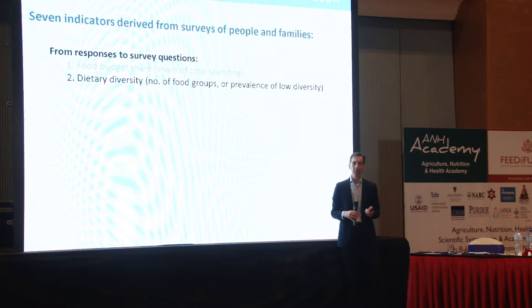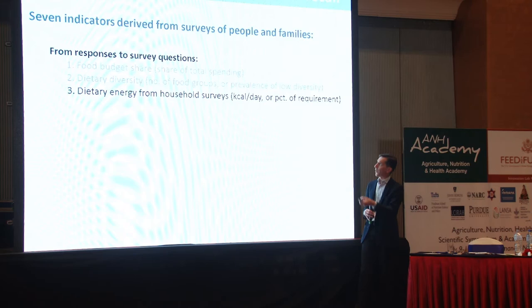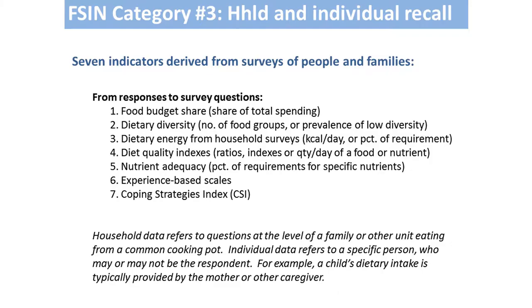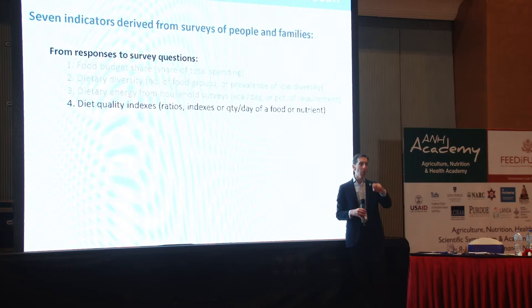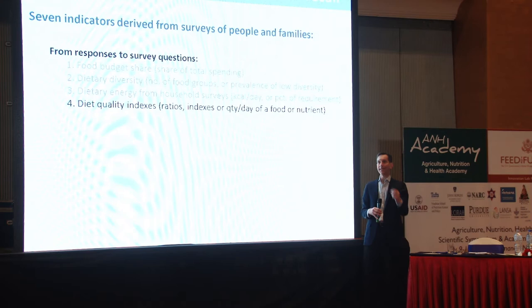You might also try to get a measure of quantity consumed. Diet quality indexes could be expressed as a ratio — what fraction of your total calories was not starchy staples — as a level of vitamin A consumed, or as a percentage of a population's estimated average requirement. That's all grouped into one kind of measure in the FSIN user's guide. When you compare these to age- or sex-specific requirements, that gives a metric of adequacy.